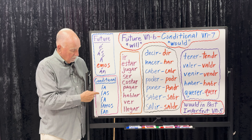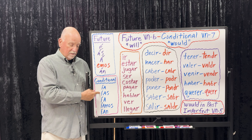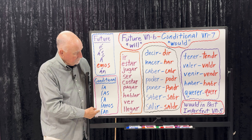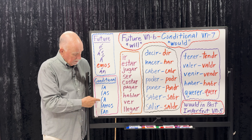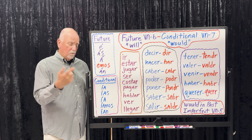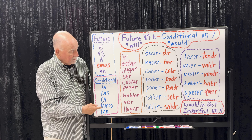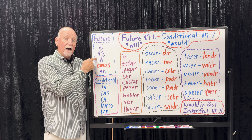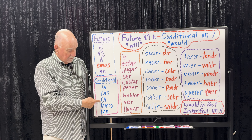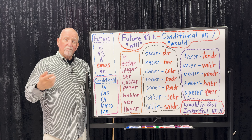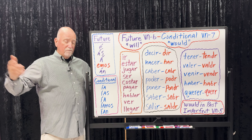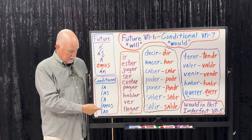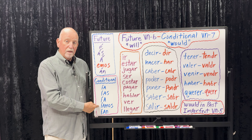Estar: 'Would you be there?' — ¿estarías allí tú? 'Mom and dad would be there' — mamá y papá estarían allí. Jugar — you're planning a game: 'We would play in the morning' — jugaríamos en la mañana. Ser: 'It will be fun' — será divertido. 'It would be fun' — sería divertido. 'We would be neighbors' — seríamos vecinos. Compare: seremos vecinos (we will be) vs. seríamos vecinos (we would be).